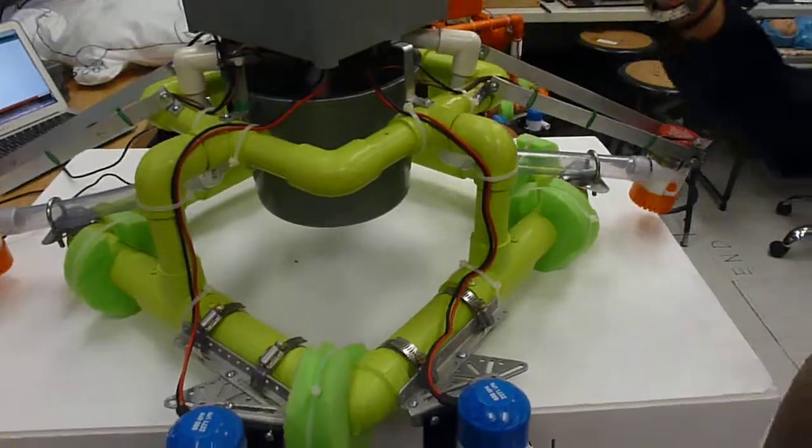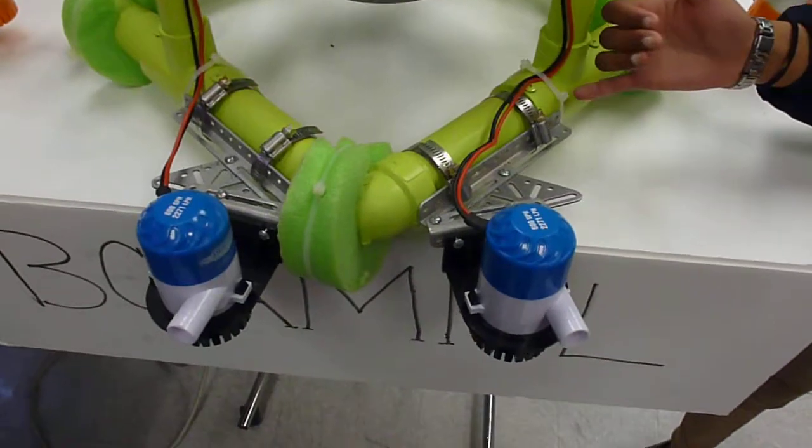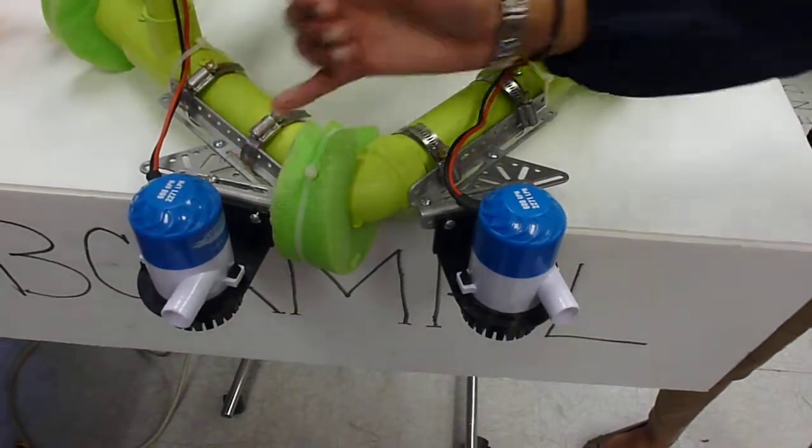So, let me show you the device. These are the thrusters, and these are used to drive the device in the water. This thruster moves it to the left, and this one moves it to the right.